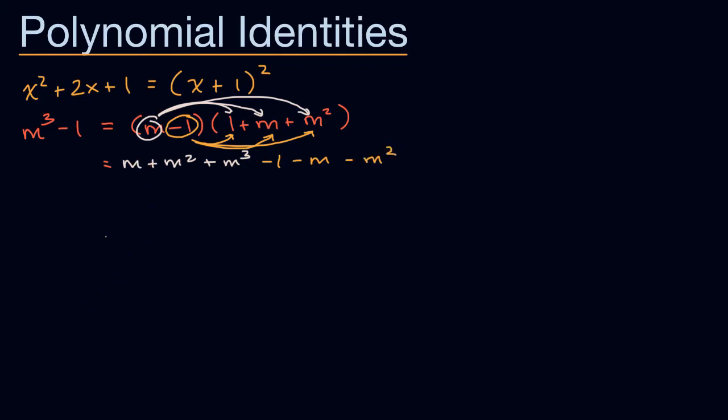And now let's see if we can simplify this. We have an m and a negative m, so those are going to cancel out. We have an m squared and a negative m squared, so those cancel out.